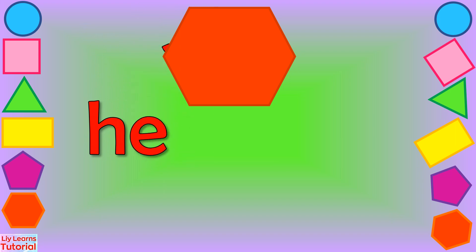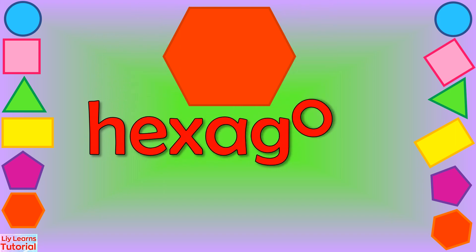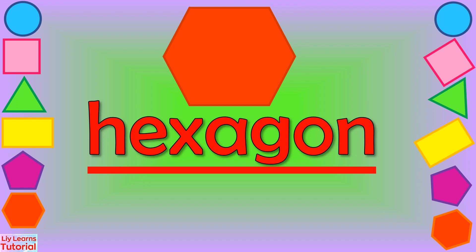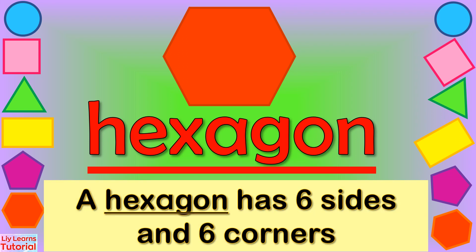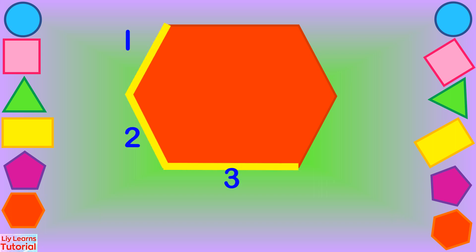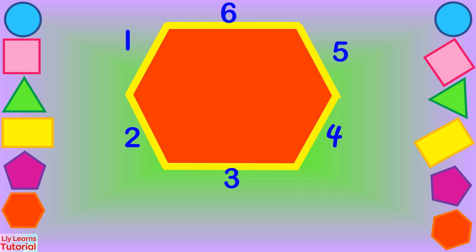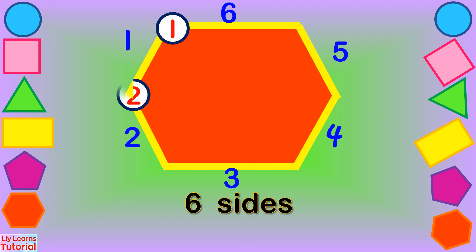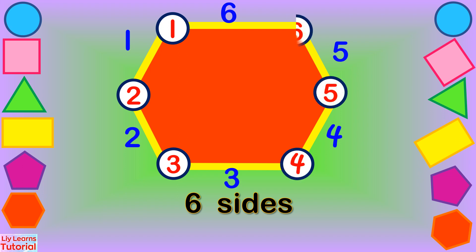Hexagon. H-E-X-A-G-O-N. A hexagon has six sides and six corners. Let's count the sides: one, two, three, four, five, six — six sides. Let's count the corners: one, two, three, four, five, six — six corners.